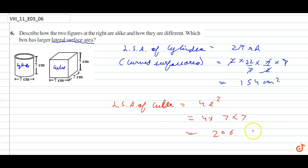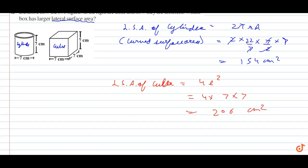196 centimeter square. So the larger surface area is the cube. Cube has the largest lateral surface area. You have 196, this is 154, so the cube has larger surface area.